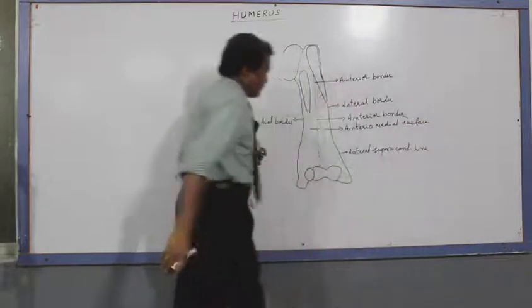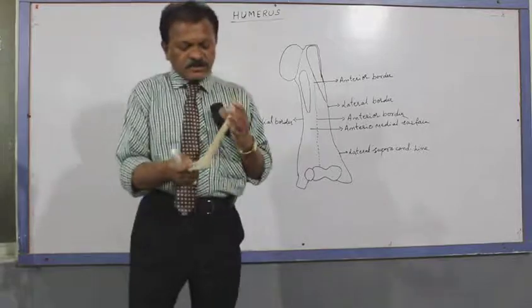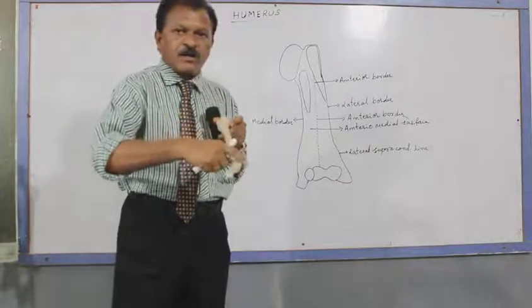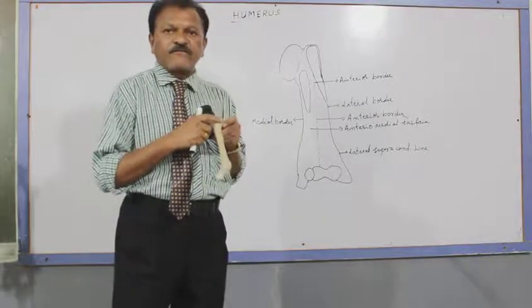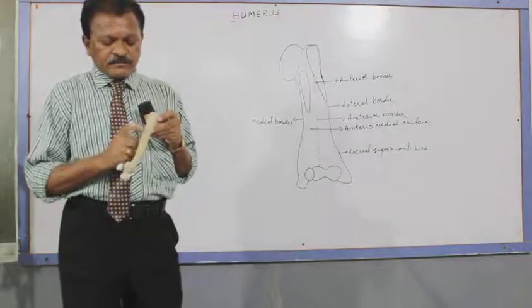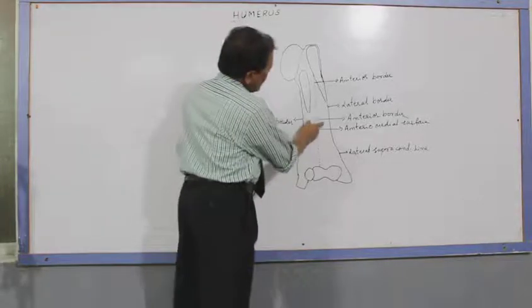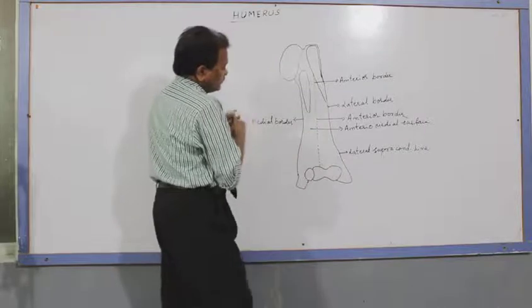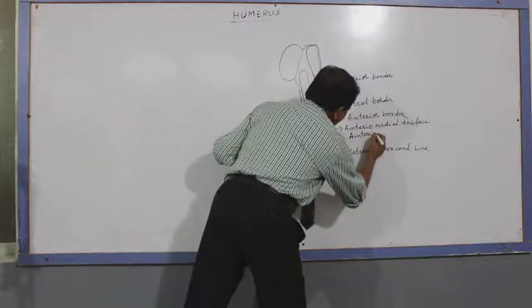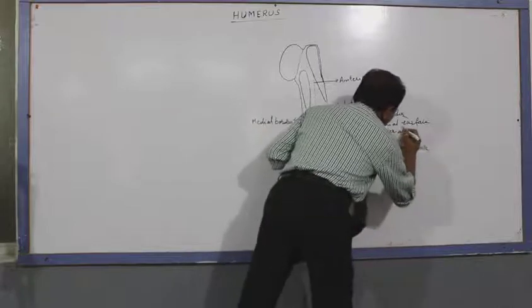There is also an anterior lateral surface. The anterior lateral surface is present in between the anterior border and the lateral border of the humerus. This surface is called the anterior lateral surface.